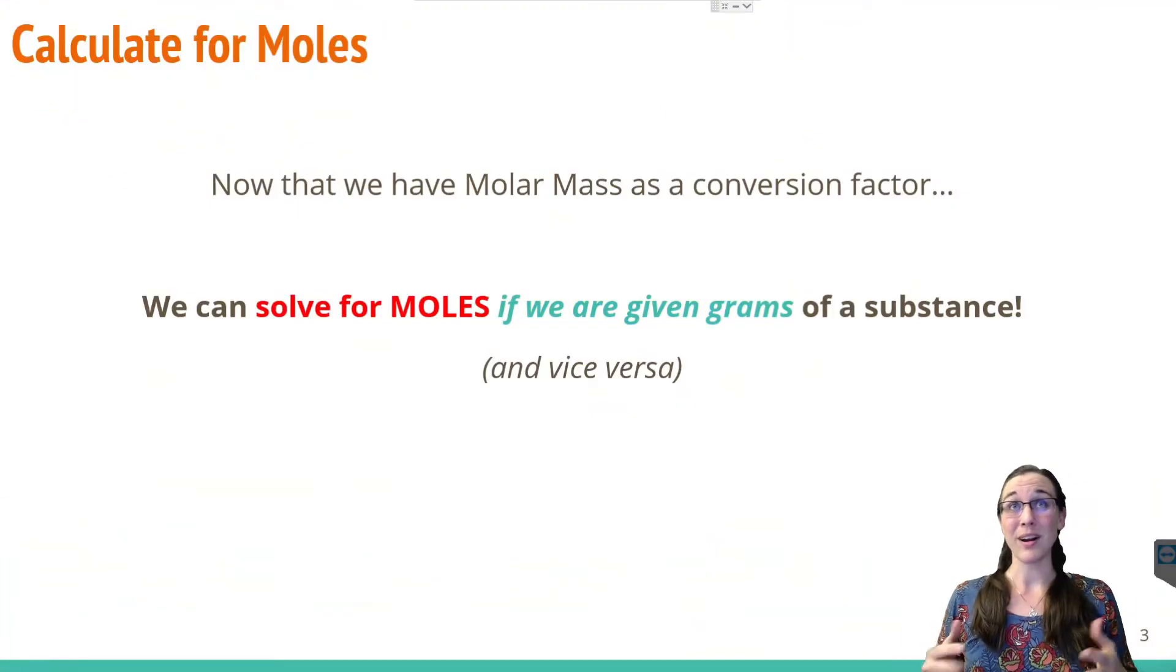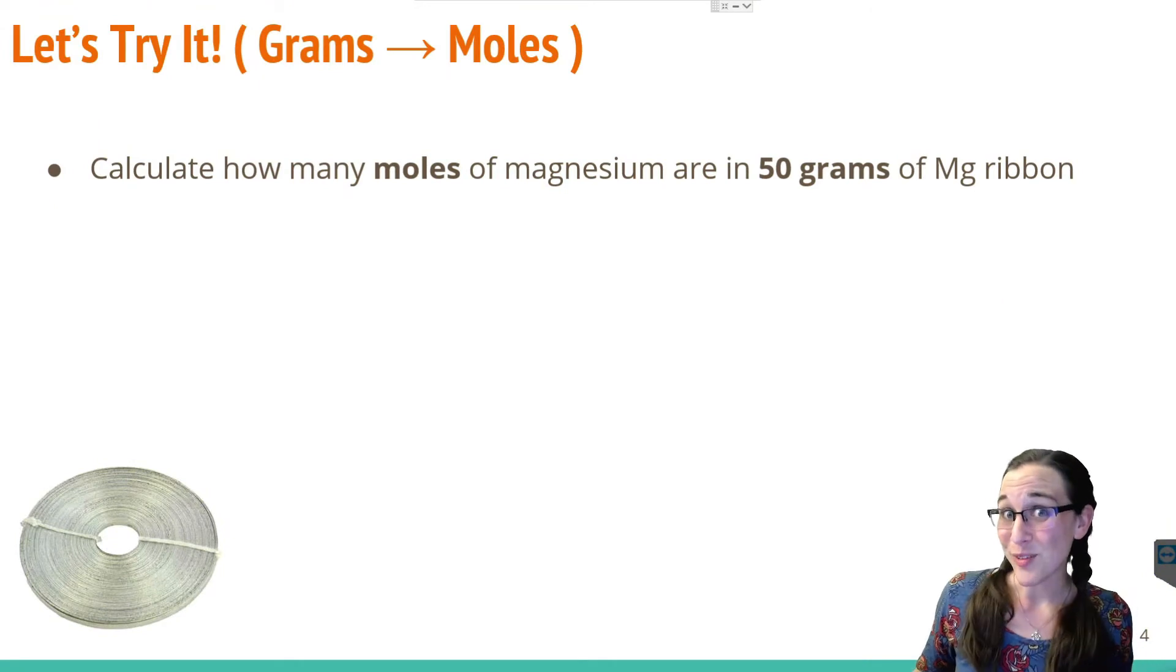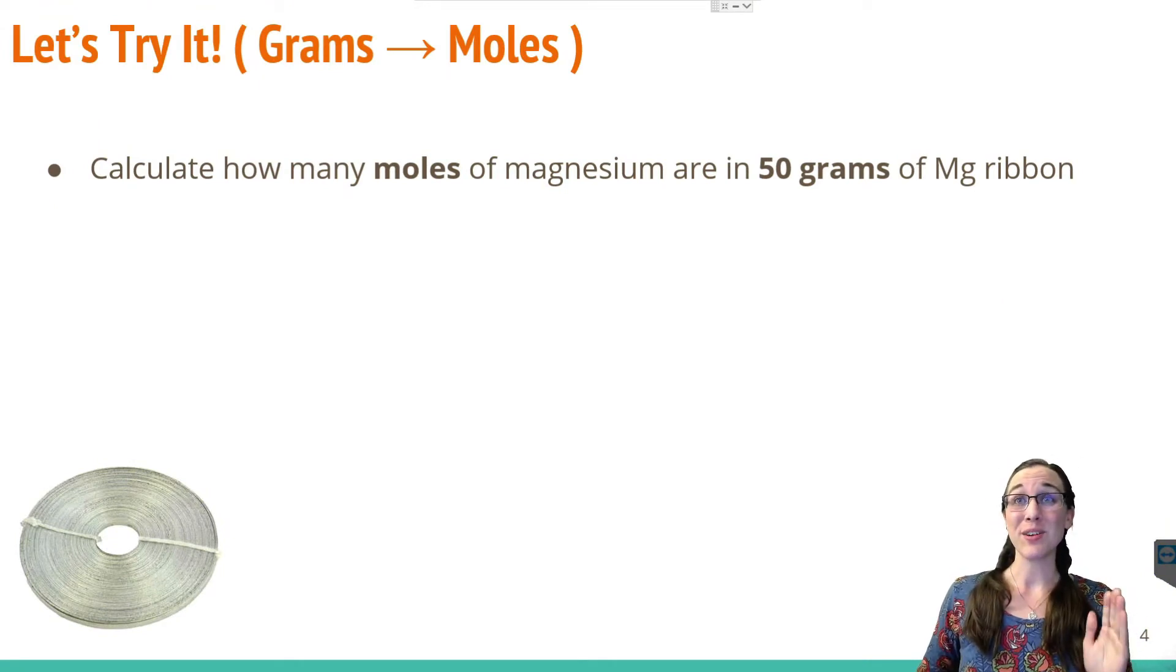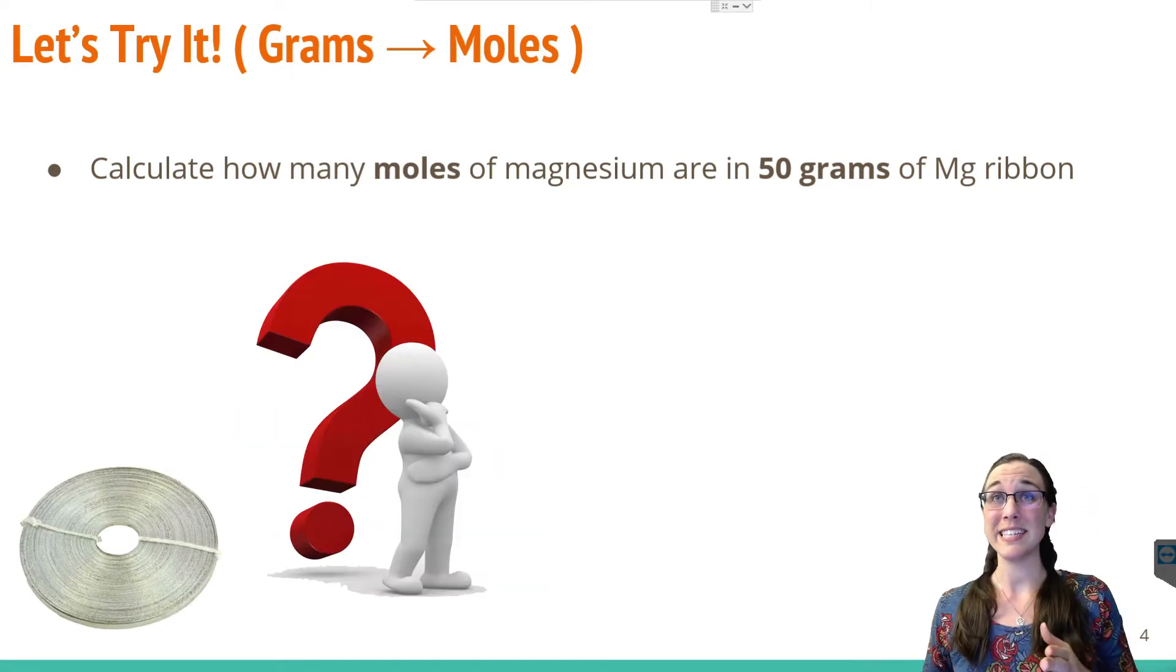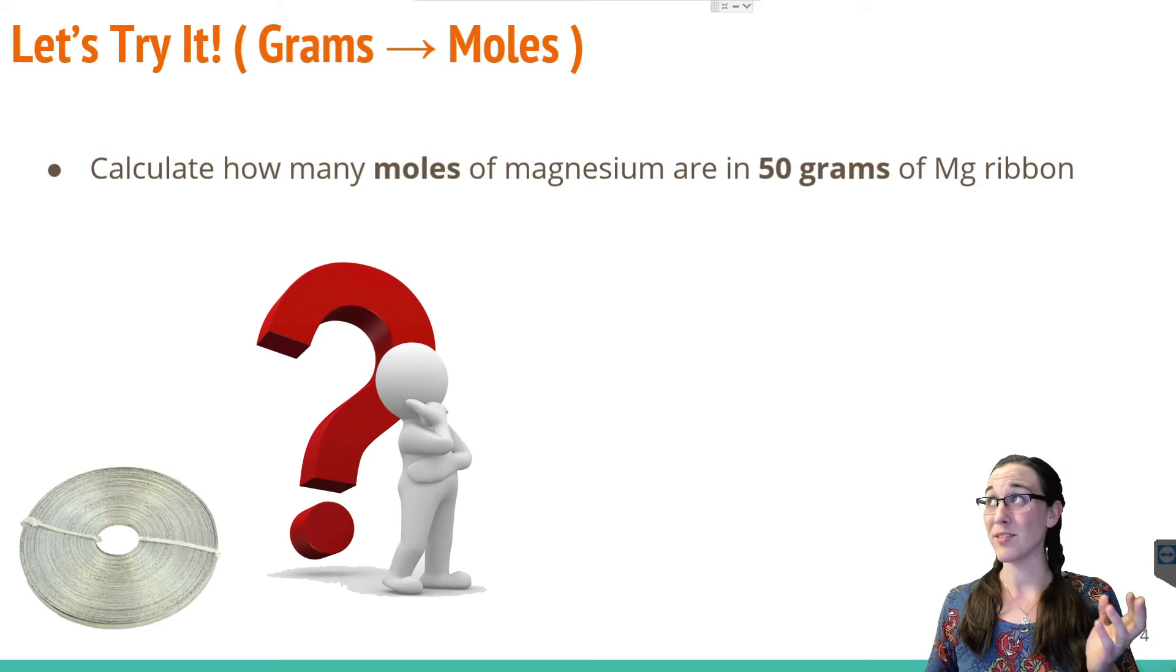So as I mentioned before, now that we have the molar mass as a domino piece, as a conversion factor, we can solve for moles if we're given grams or we could solve for grams if we were given moles. So let's waddle right in and try converting grams to moles first. If we read this question, we see it's asking how many moles of magnesium are in 50 grams of magnesium ribbon.